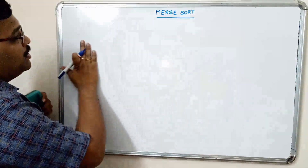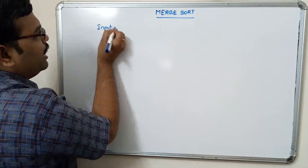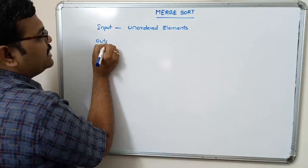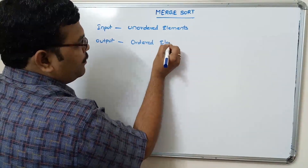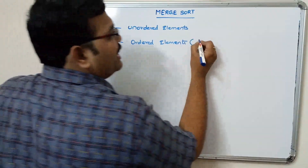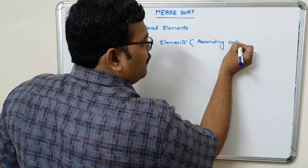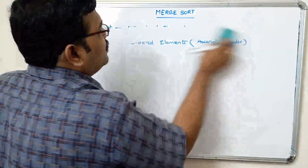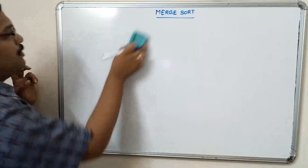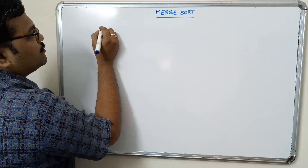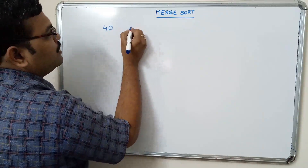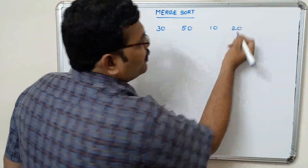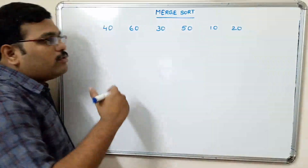The input is, as usual, unordered elements and the output is ordered elements, preferably in ascending order. Let us take some elements and see the procedure. We take the elements 40, 60, 30, 50, and 20, and we have to sort them using merge sort.